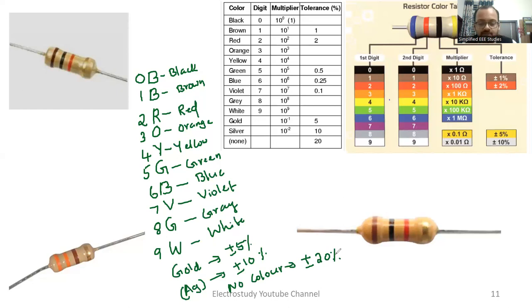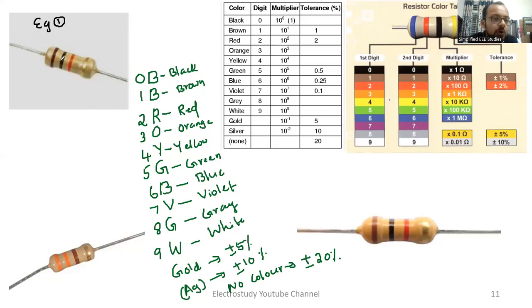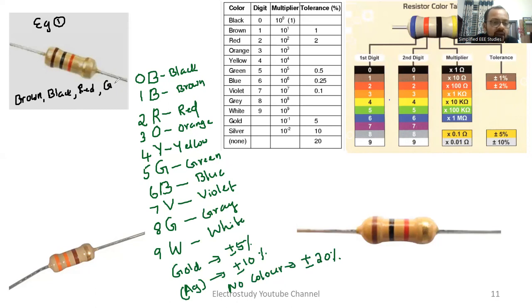Now I will tell you how to calculate. Let us consider Example 1 — I would like to compute the color code of the given resistor. Note down the colors starting from the left: the first color is brown, the next is black, then red, and the fourth band is gold.